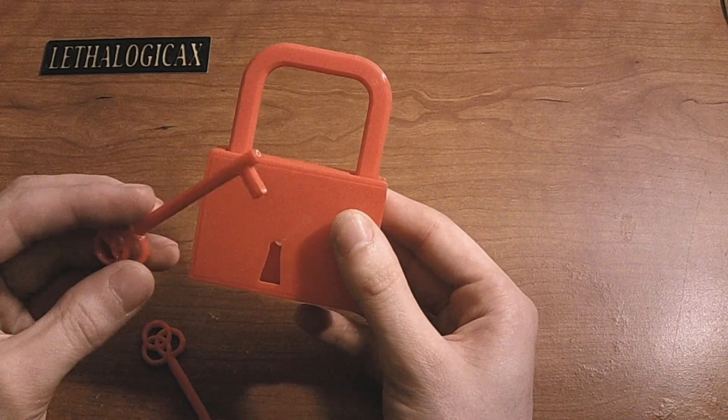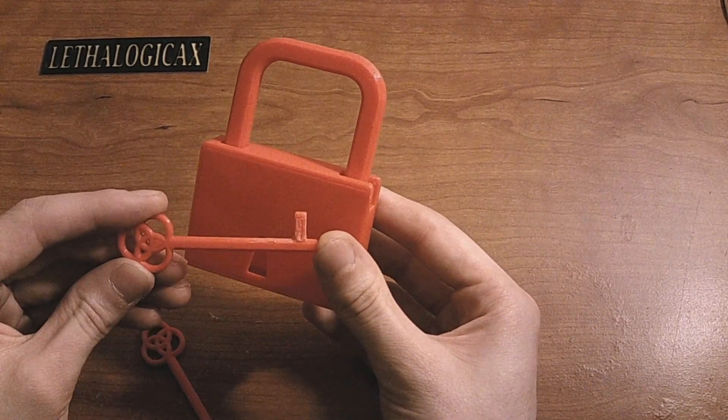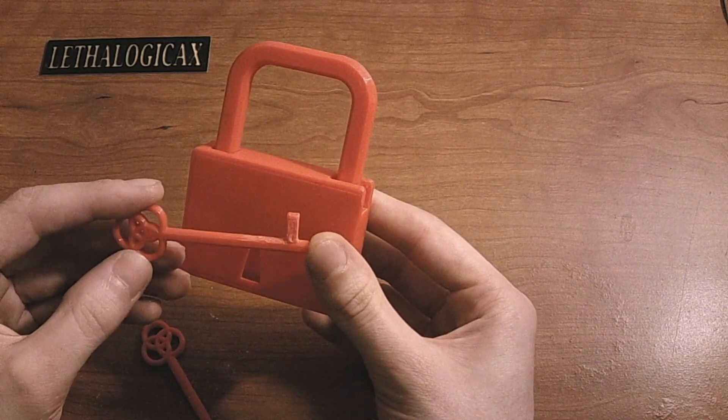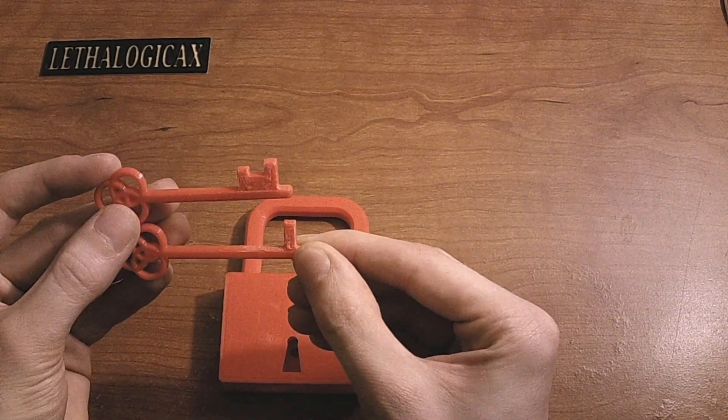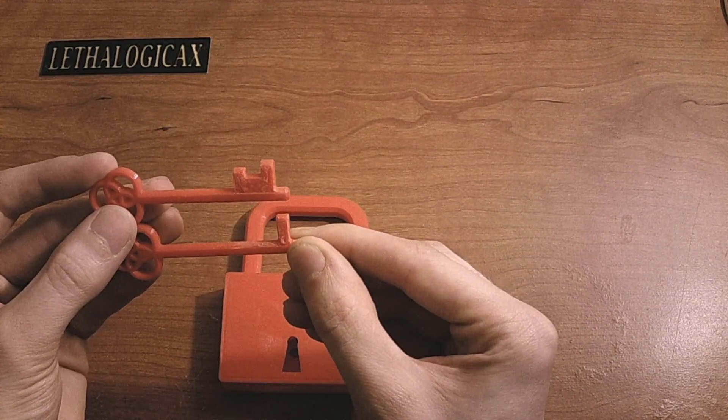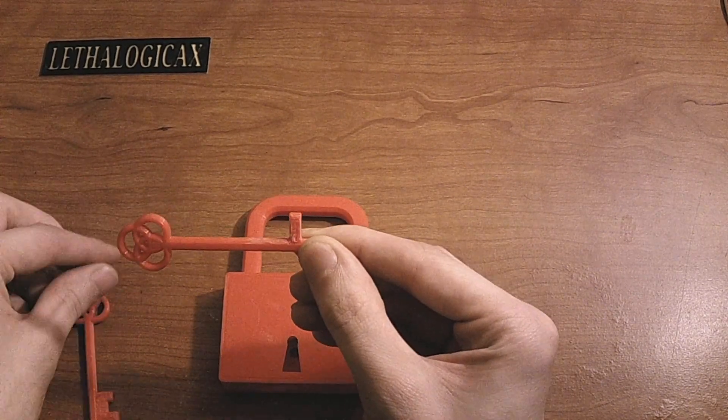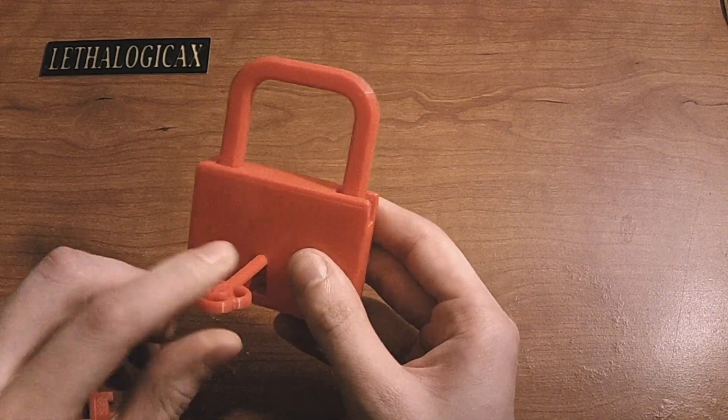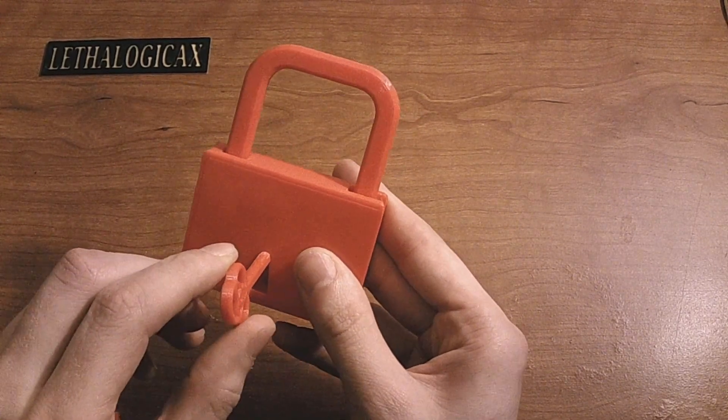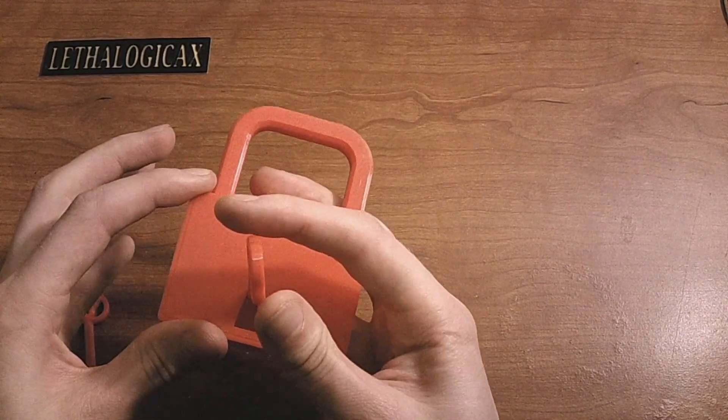So I took some advice from Bosnian Bill and I made a tensioner using the actual key and I've just got rid of all of the bumps that interface with the gates, leaving only the last one that interacts with the bolt. So we can slide that in there and we can get good tension on it.